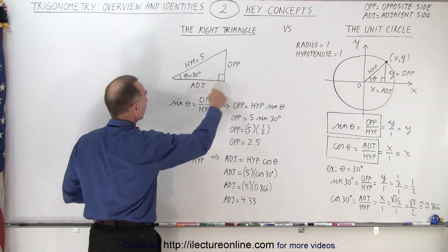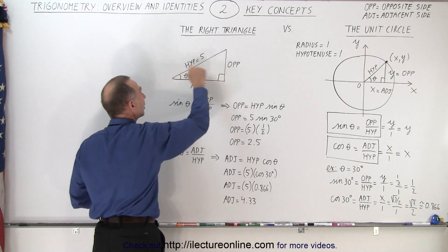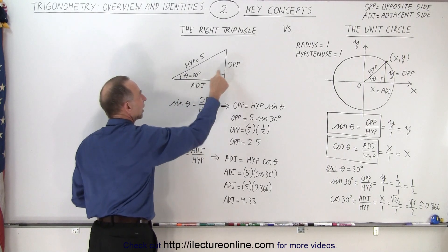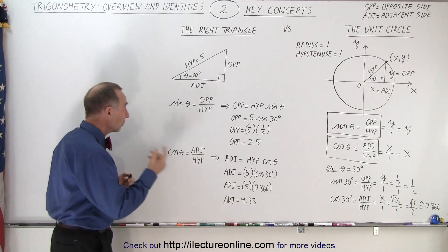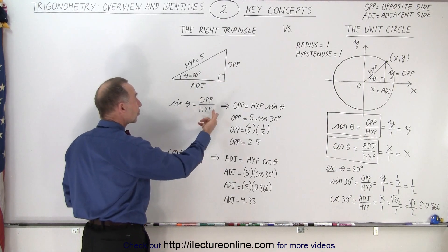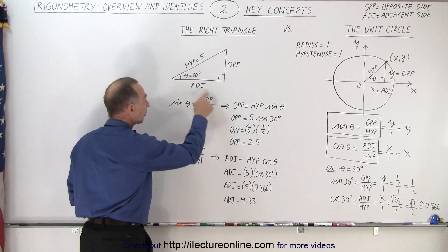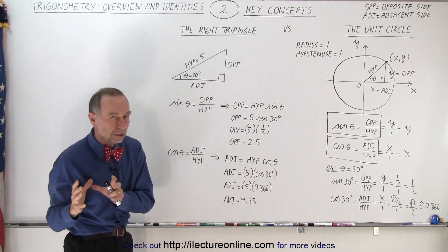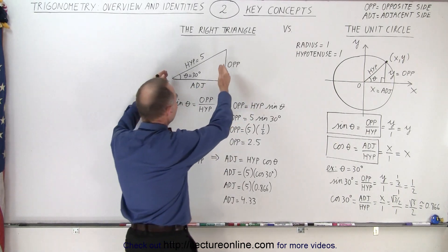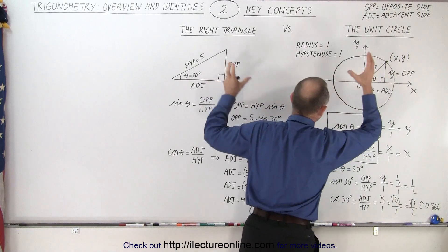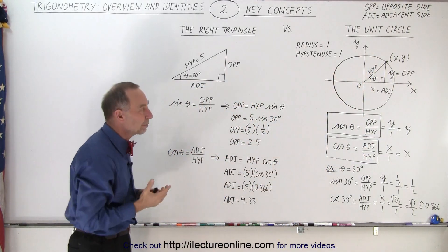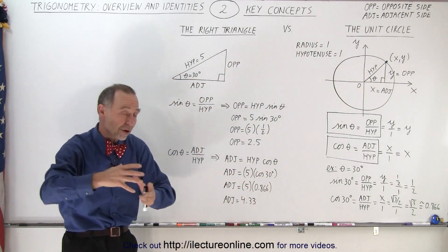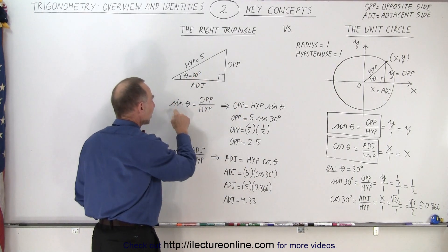Let's say we have a right triangle where the hypotenuse is equal to 5 and the angle is 30 degrees, and we need to find the opposite side and the adjacent side. We define the sine of theta as the ratio of the opposite side to the hypotenuse. Notice this is exactly the same relationship as in the unit circle — it doesn't matter if the hypotenuse equals 1 or 5. The relationship is always correct: sine of the angle equals opposite over hypotenuse, and cosine equals adjacent over hypotenuse.